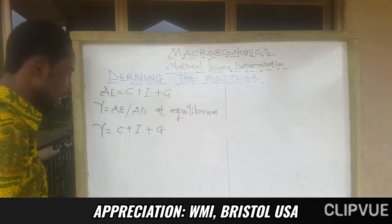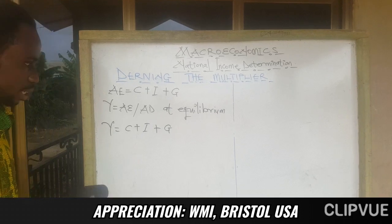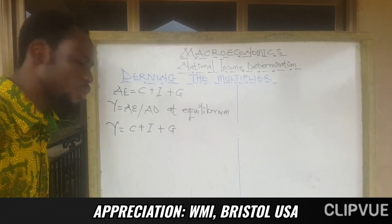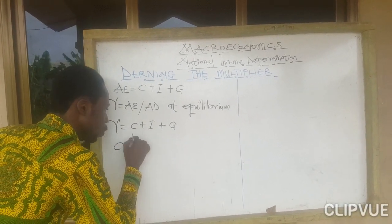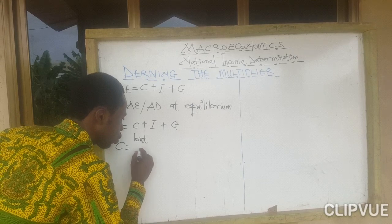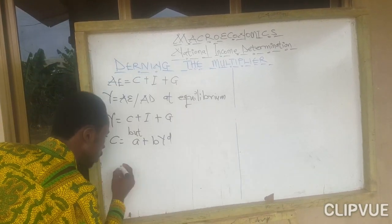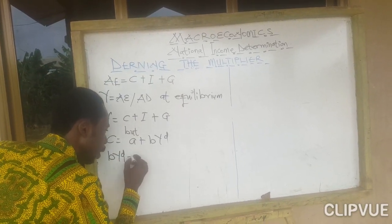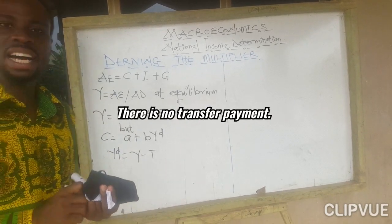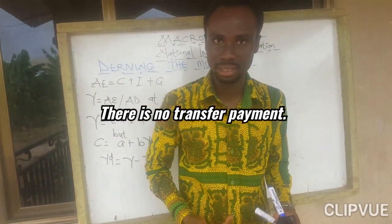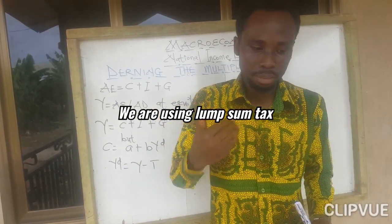We have understood that Y is equal to consumption plus investment plus government spending. We know the consumption function to be equal to a plus bY_d, and the disposable income Y_d is equal to income minus tax. We are assuming no transfer payments and that we are using lump sum tax.